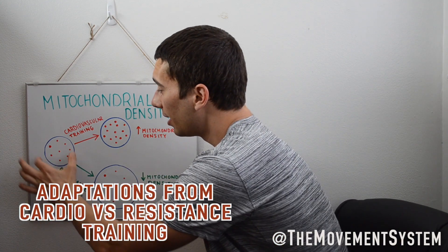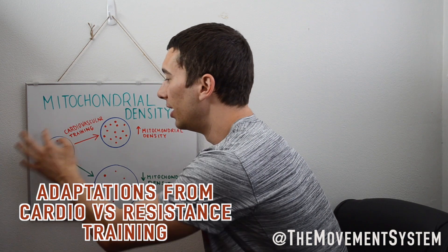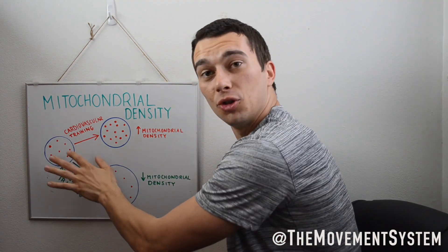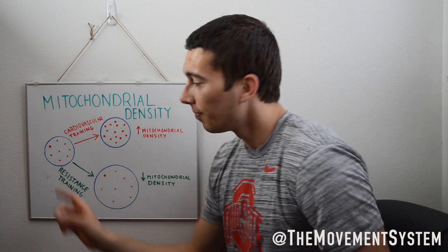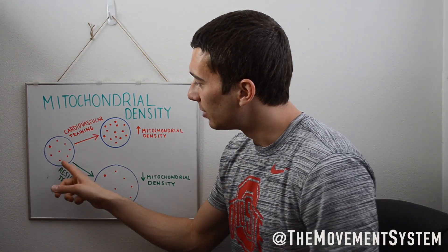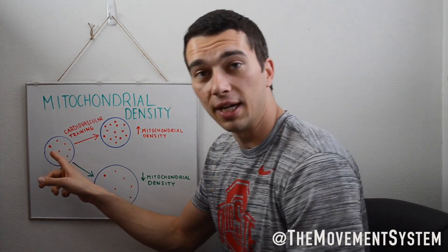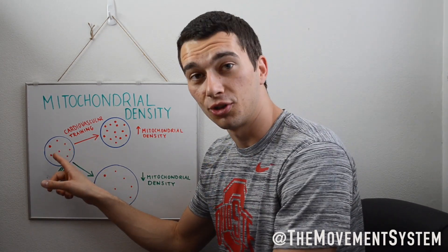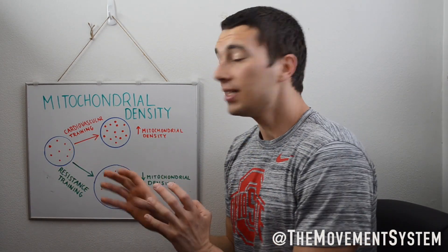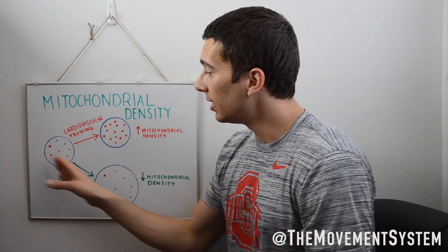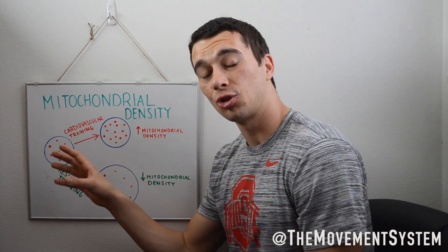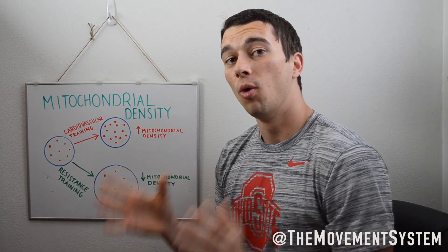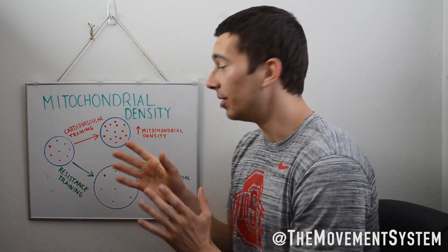If we think about this muscle over here, we can think about a cross section of say a bicep muscle and this is someone who is untrained. We can see their muscle here is this blue circle and there's eight or so red dots in there. These are representing the mitochondria. Now, we can say that this guy is going to do either resistance training or cardiovascular training. What is going to be the adaptation from each?